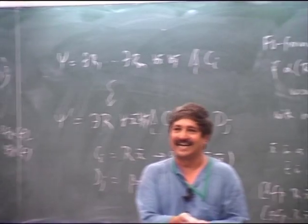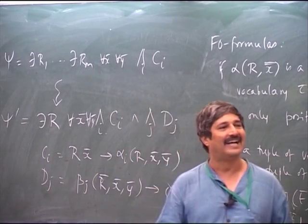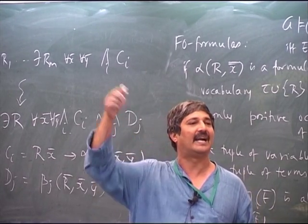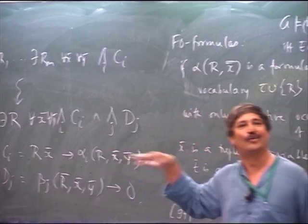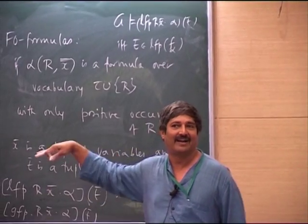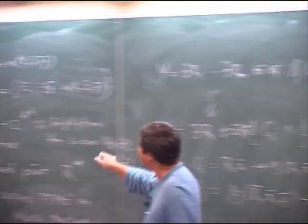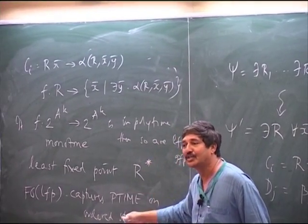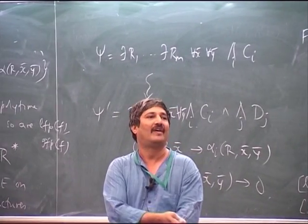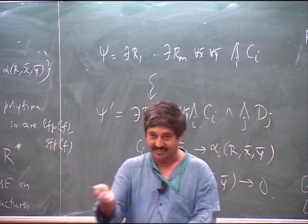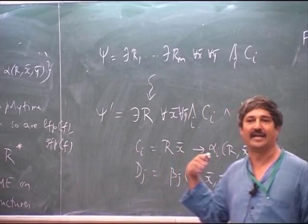You start with the least element — the empty set — and iterate. How far do you need to iterate? There is a bound of order N^k sitting there. So you do not need to go too far. The Turing machine takes codes as input and checks whether this property is true, and this can be done in poly time.